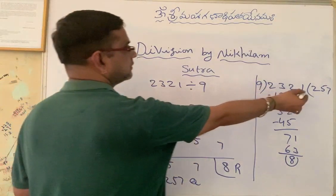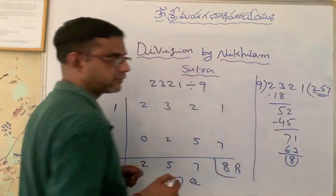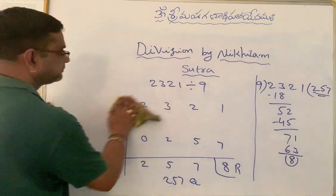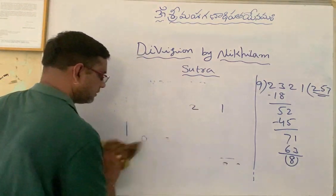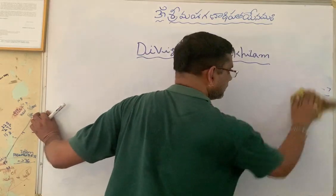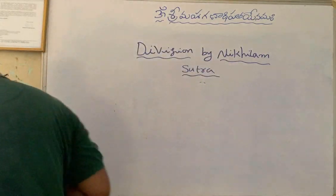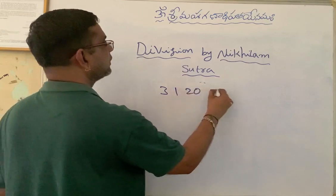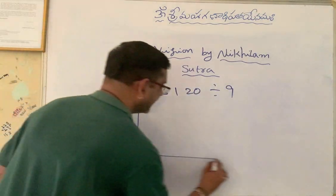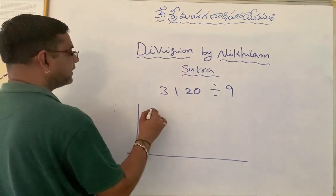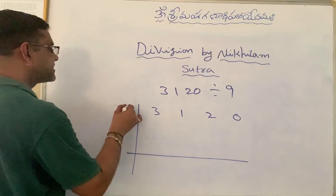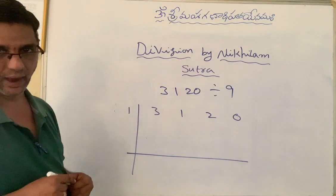It is the same as the traditional method what we got. Now let us consider another example: 3120 divided by 9. Draw 2 lines like this, write the dividend separately, and here write Nikhilam of 9, that is 1.